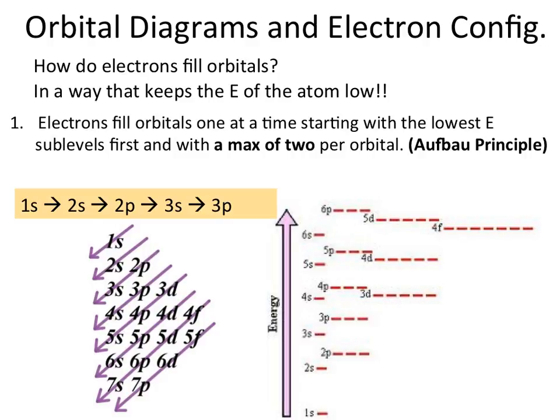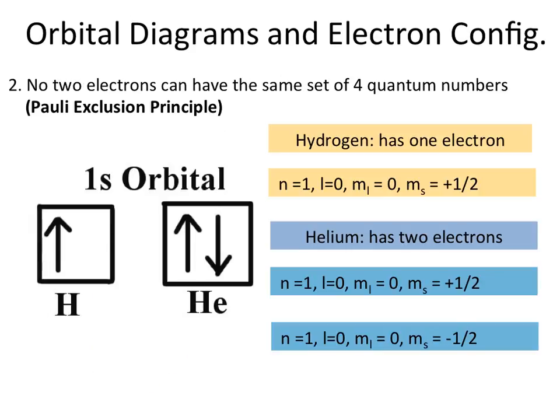The electrons fill the orbitals one at a time, with a maximum of two electrons per orbital. No two electrons can have the same set of four quantum numbers — this is the Pauli exclusion principle. When electrons are put into orbitals, they're added in a way that makes each set of quantum numbers unique.